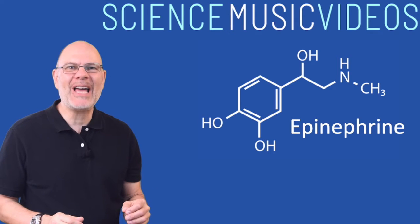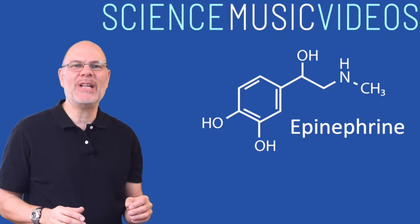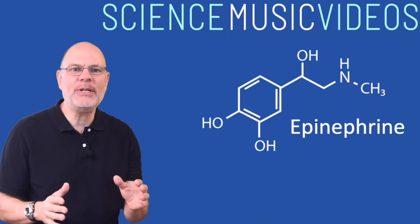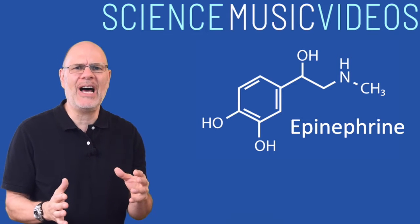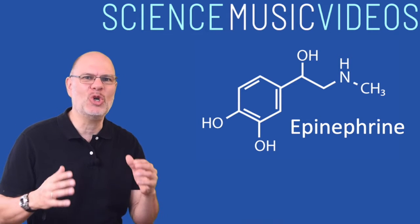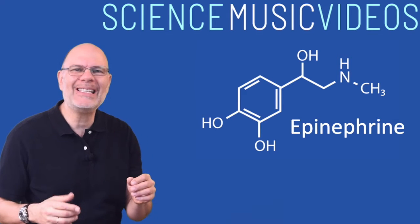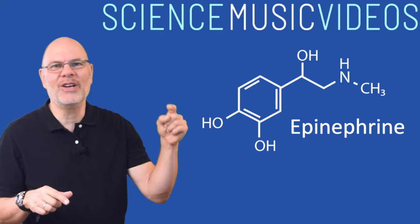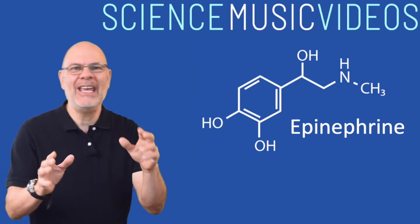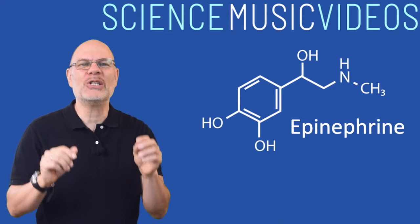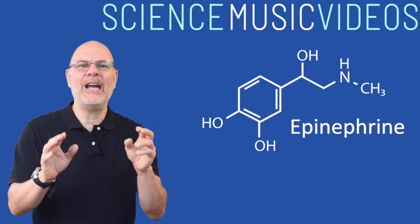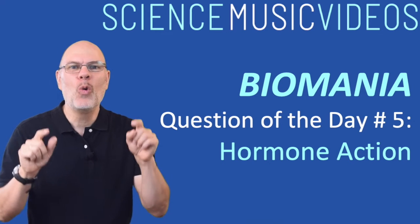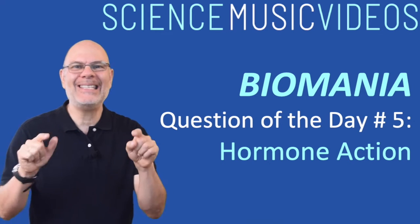Hey, it's Mr. W from ScienceMusicVideos.com. This hormone, epinephrine, can make your pupils dilate, it can make your heart race, and it can get your liver to convert its stores of glycogen into glucose as part of the fight-or-flight response. How does it work? We're going to look at that today.